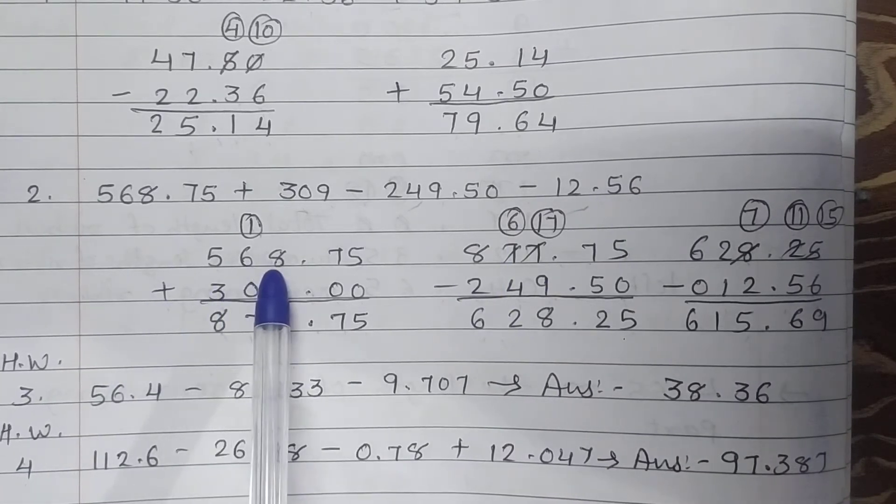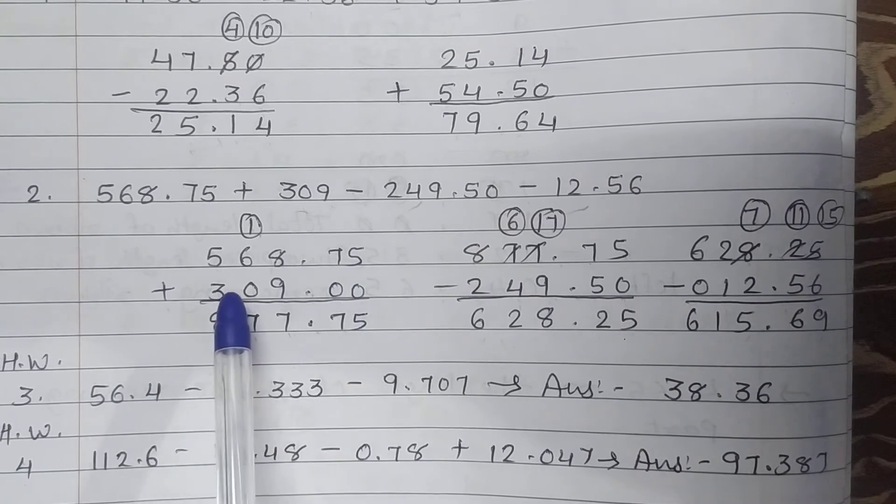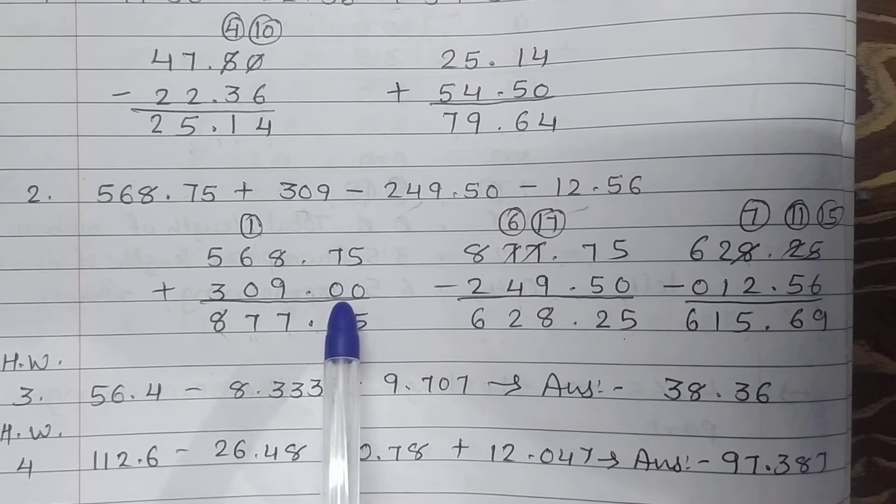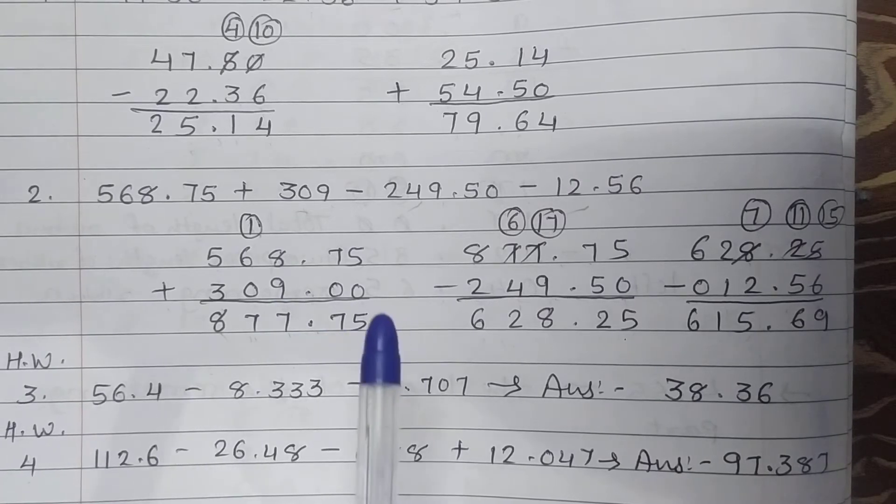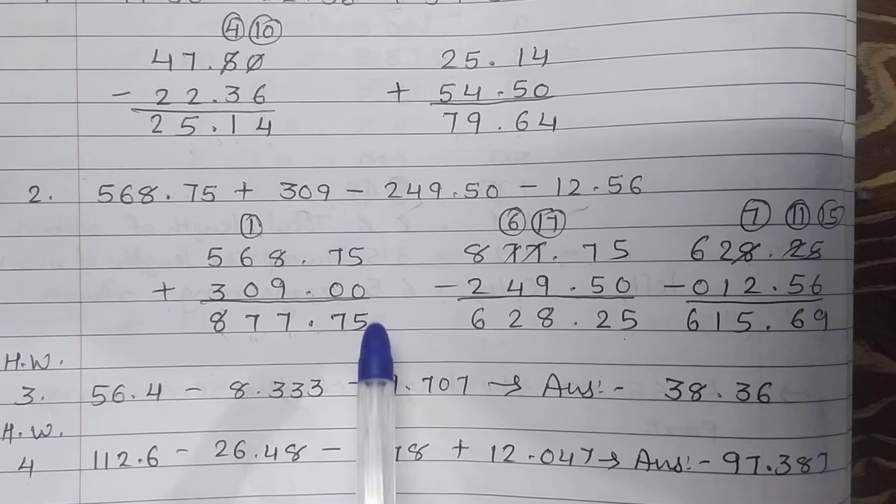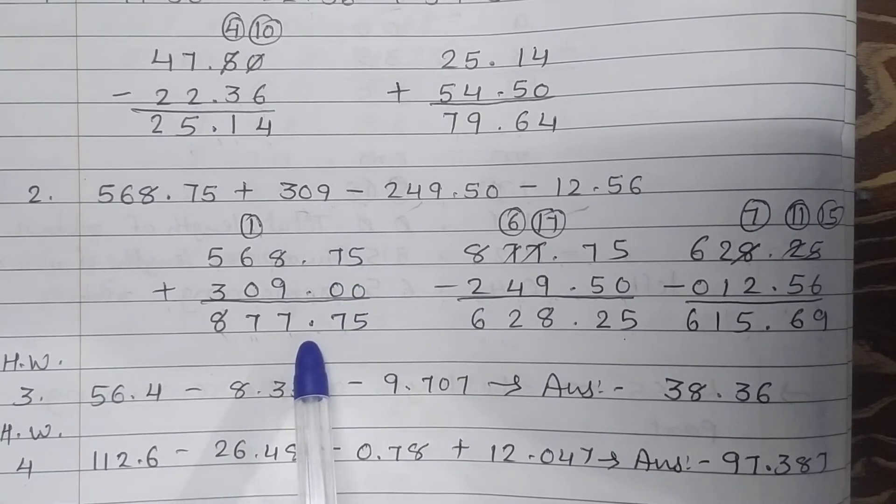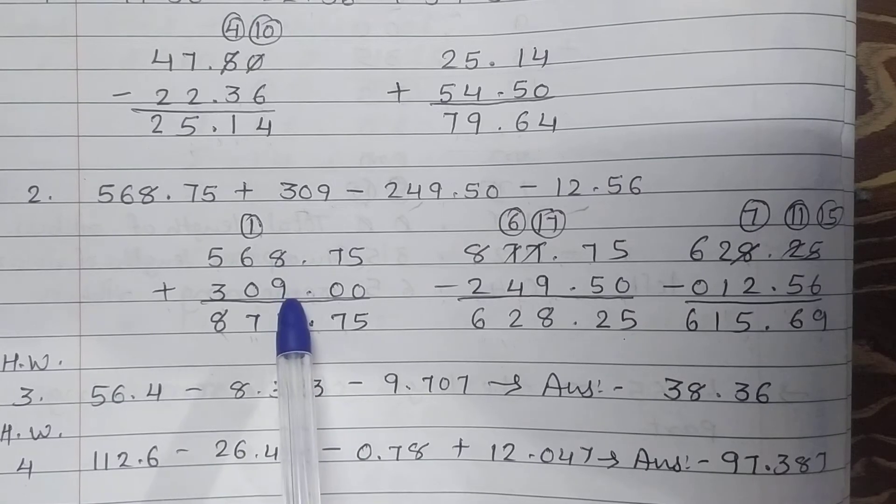So 568.75 and 309.00. Students, 309 has no decimal places, so write down two zeros. Now 5 plus 0 is 5, 7 plus 0 is 7. Point as it is.